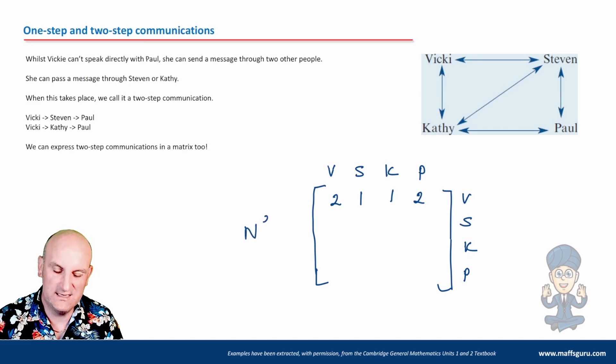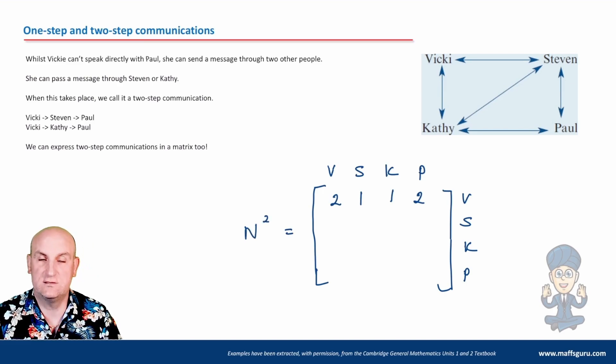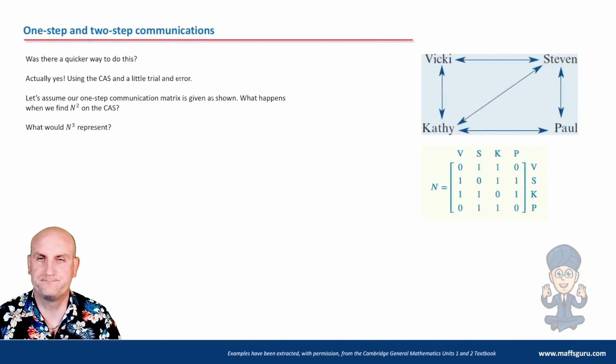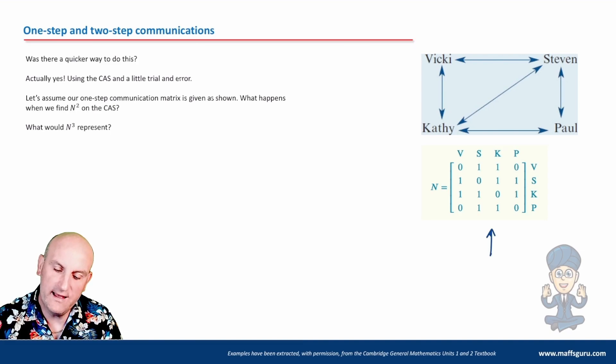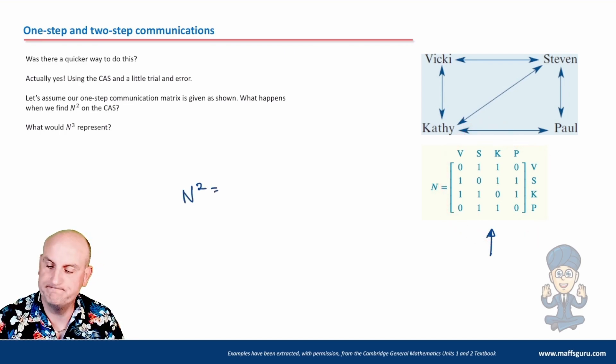Hold on a moment. We've seen that before, haven't we? N squared. Well, let's go back to our original thing here. So if you remember from a previous part, that there was my one-step communication matrix. And you've noticed again that those diagonals there are zero. So what I'm now going to do is see what happens when I put this into my calculator and square it.